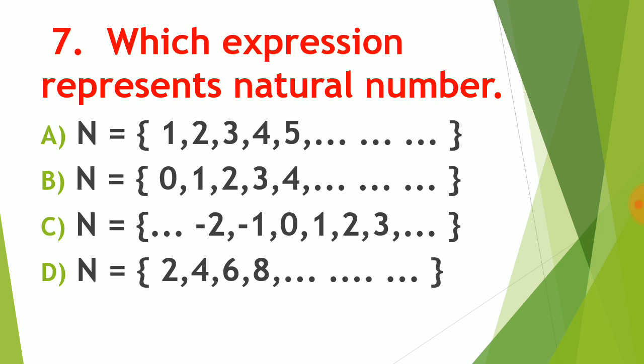Question number seven: which expression represents a natural number? Natural numbers start from 1, 2, 3, 4, 5, and run to infinity. So the correct answer is option A. Option B is 0, 1, 2, 3 — this is the whole number set. Whole numbers start from 0, but natural numbers start from 1. So for question number seven, the correct answer is A: n = 1, 2, 3, 4, 5, and so on.